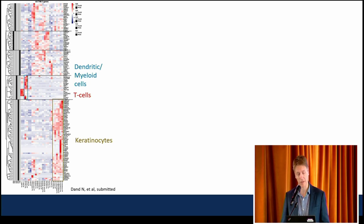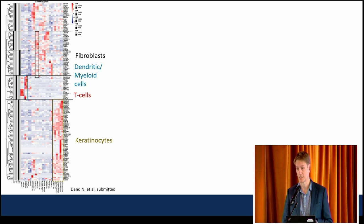A good proportion of the genetic predisposition loci actually map to the epidermis, and are likely to contribute to the disease process in that location. Fibroblasts also seem to be playing a quite significant role — still very much underexplored. And then there are other loci that seem to be distributed across multiple different cell types, perhaps a little bit more nonspecific.